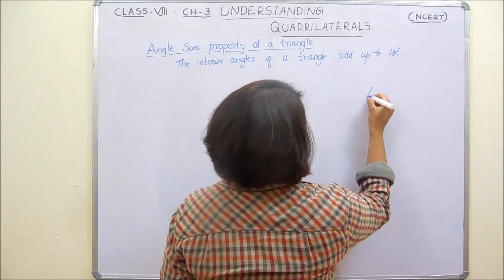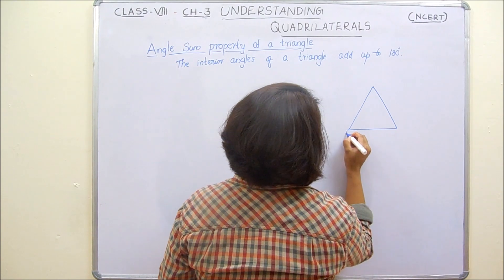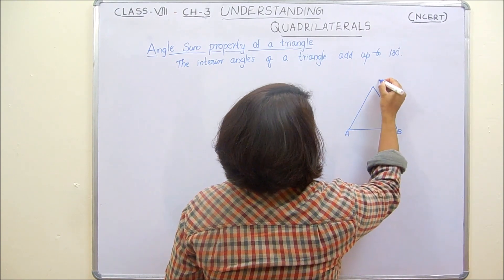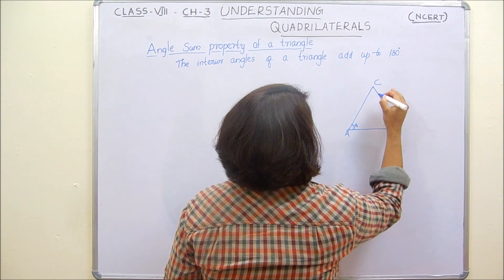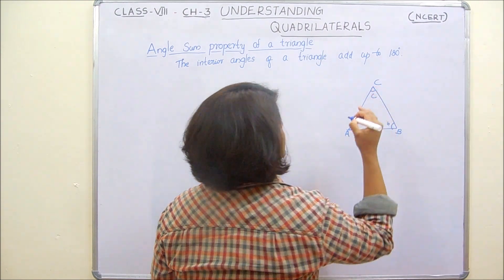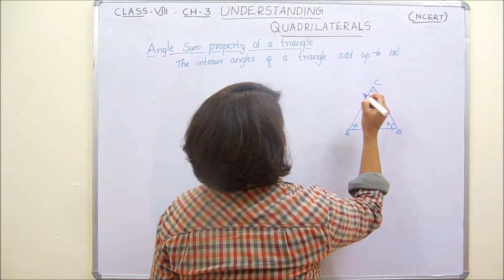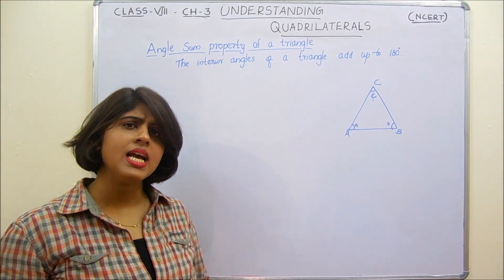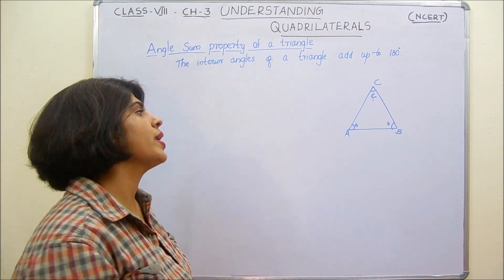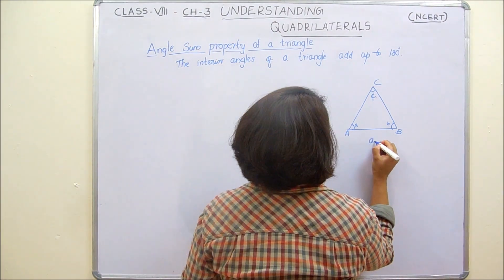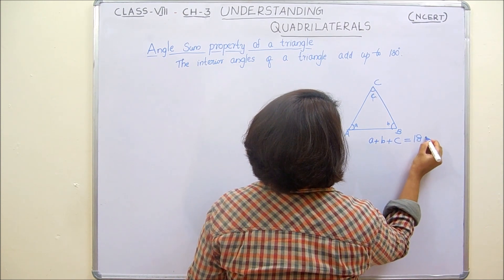Let us consider triangle ABC, where the small letters a, b, and c are the corresponding angle measures. Then by the angles and property of a triangle,